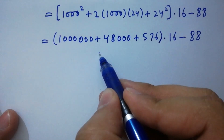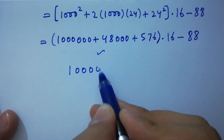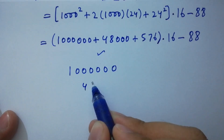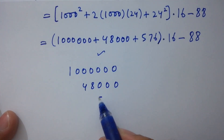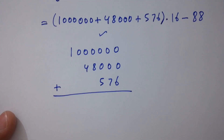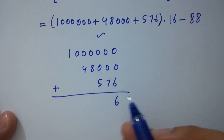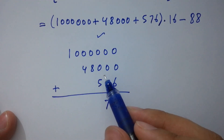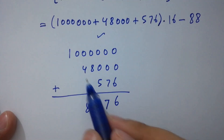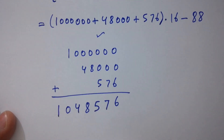Adding 1,000,000 plus 48,000 plus 576: we get 1,048,576. So we now have 1,048,576 times 16, minus 88.